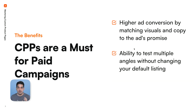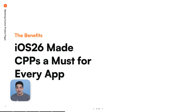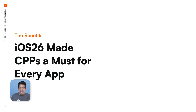You can have different custom product pages and swap them between keywords until you know what works. And because with ads you get results really fast, you can then take that and apply it to organic. But then iOS 26 made it a must also for organic, and the reason is exactly the same minus the money.